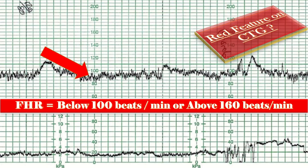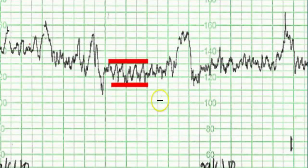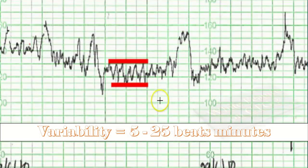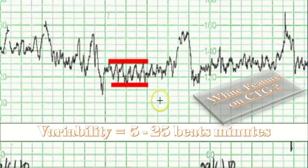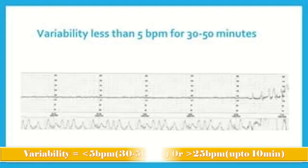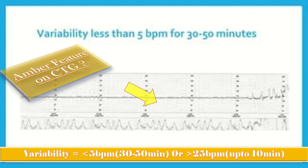When the variability on CTG is 5 to 25 beats per minute, that is the white feature. When the variability is less than 5 beats per minute for between 30 and 50 minutes, or more than 25 beats per minute for up to 10 minutes, that is included among the amber features.